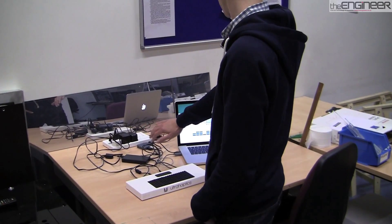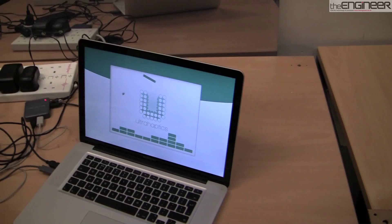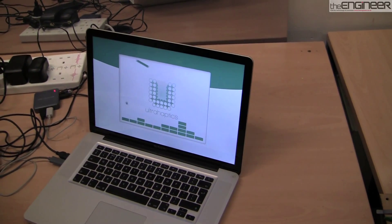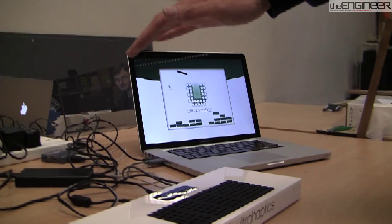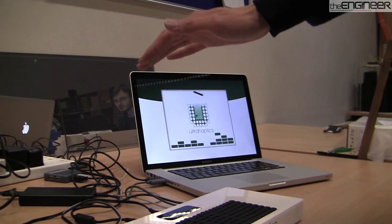Of more obvious practical use is the group's ultra-haptic system, which uses ultrasound waves to allow users of gesture control technology, such as Microsoft Kinect, to effectively feel a cursor's position on the screen while they're moving their hand around.